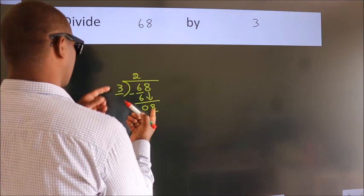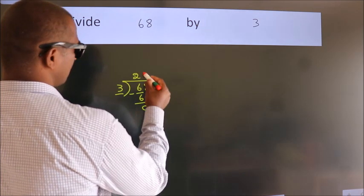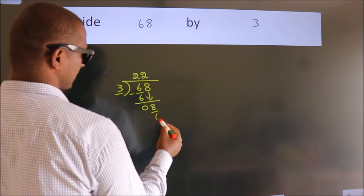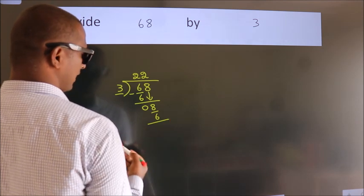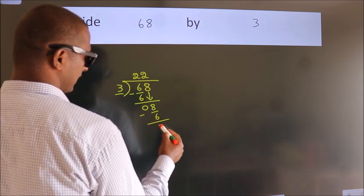A number close to 8 in 3 table is 3 times 2 equals 6. Now, we subtract. We get 2.